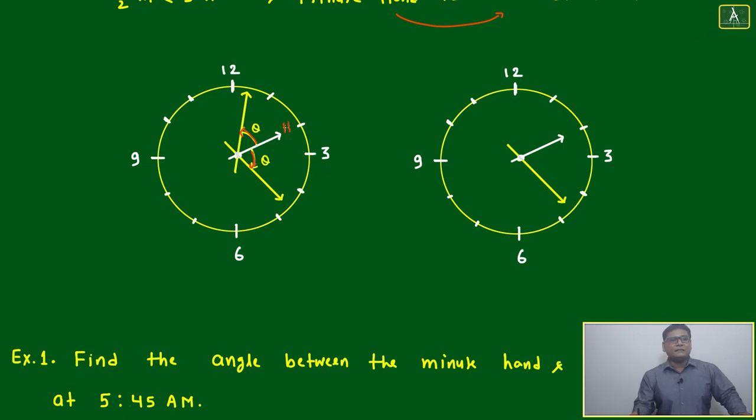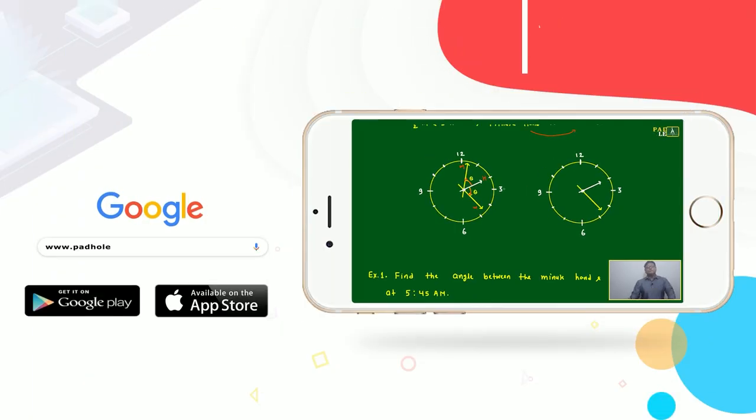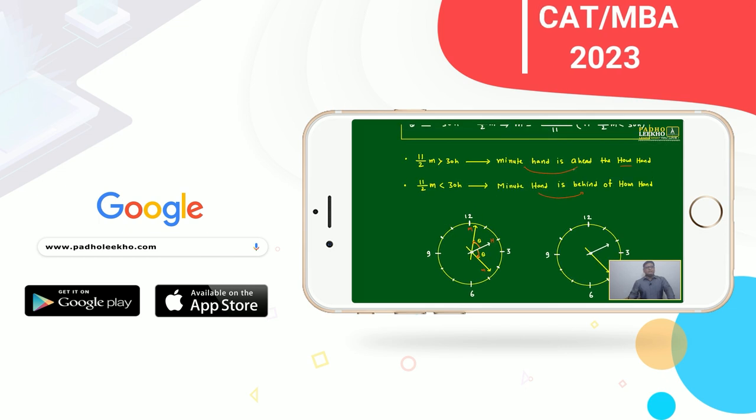On this side, the minute hand is ahead of the hour hand. This is your hour hand, this is your minute hand. Both times the angle will be theta. At any position, if you want to find the value of theta, you always get two values—one on this side, one on this side. This will be ahead if 11 by 2 m is greater than 30; this is behind.